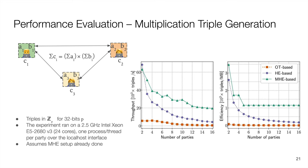In the peer-to-peer triple generation experiment, the parties must compute a product C between two additively secret-shared values A and B, and each receive an additive share of the result. The figure on the left-hand side shows the throughput in thousands of triples generated per second for each triple generator. Except for the two-party case, the MHE-based generator outperforms the baseline generators. The figure on the right-hand side shows the network efficiency in thousands of triples generated per megabyte of network traffic per party. For this metric, the MHE-based solution is always the most efficient one.